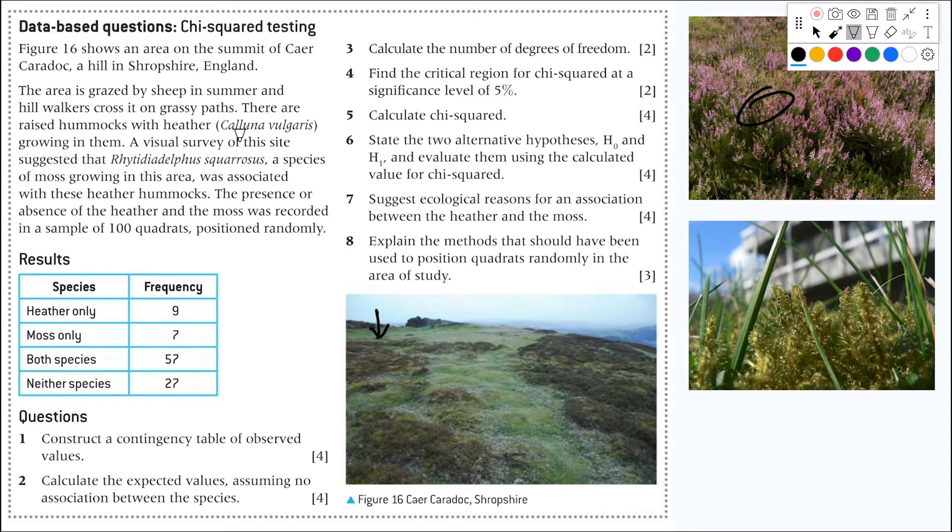A visual survey of the site suggested that Ritidia delphus quarrossus, a species of moss growing in the area, was associated with this heather hammock. So here we have the moss, tiny little plants near the blades of grass here. The presence or absence of the heather and the moss was recorded in a sample of 100 quadrants positioned randomly. Here we have the results and the questions with the marks for each question.